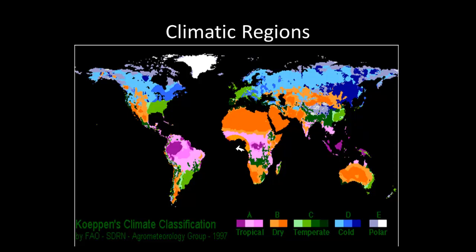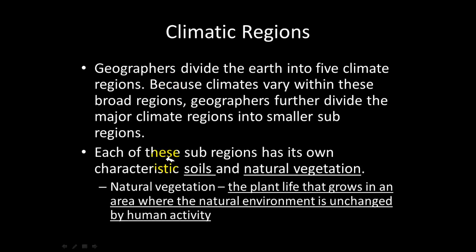Now, climatic regions: geographers have divided the earth into five different climatic regions, each with two to four sub-regions. These are the tropical region, the dry region, the temperate region (which includes much of the United States), the cold region (northern Europe and northern Canada), and the polar region (the North Pole). Each sub-region has its own characteristics, soil, and vegetation, because certain plants need specific temperature conditions in order to thrive.